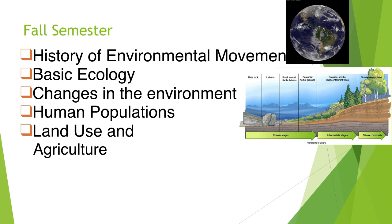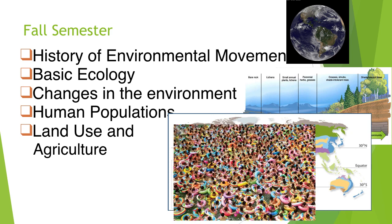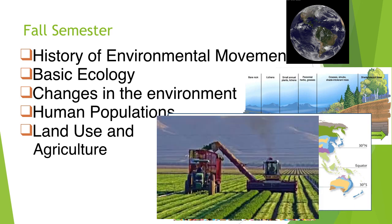We then do some basic ecology. We talk about succession, changes in the environment, and biomes. It's a lot of review of biology, and then we study human populations and how the population has grown. We end the semester with land use and agriculture, learning about things like the green revolution and how our food is made.